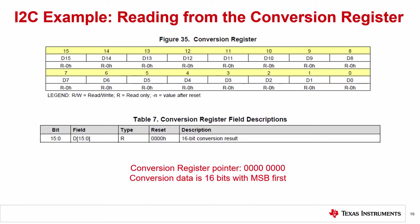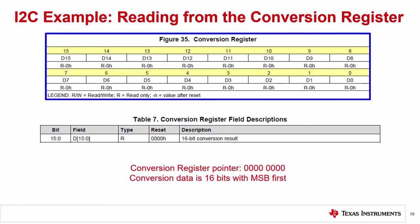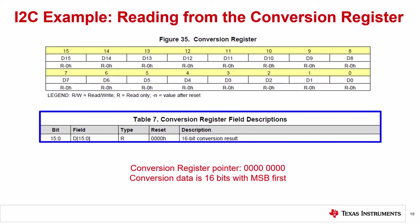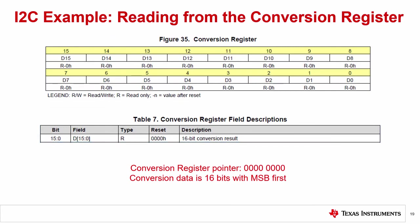The ADS-1115 has a 16-bit ADC and therefore puts out 16-bit data conversions. To get the ADC conversion data, you need to read from a conversion register. The conversion register address pointer is 00000000. Figure 35 from the datasheet shows the conversion register data field, and table 8 shows the configuration register field description. Conversion data appears as a 16-bit result in binary 2's complement. A positive full-scale input produces an output code of 0x7FFF, and a negative full-scale input produces an output code of 0x8000.